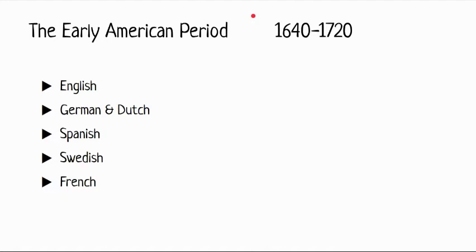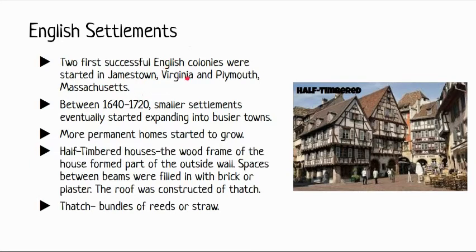The early American period ran from 1640 to 1720, when there was a large influx of settlers coming to the Americas. The English first settled in Jamestown, Virginia and Plymouth, Massachusetts. Between 1640 and 1720, smaller settlements expanded into much busier towns, prompting the construction of more permanent housing structures. Settlers used influences from their own cultures, which is why we have such an array of different housing styles — these were skills they brought with them.